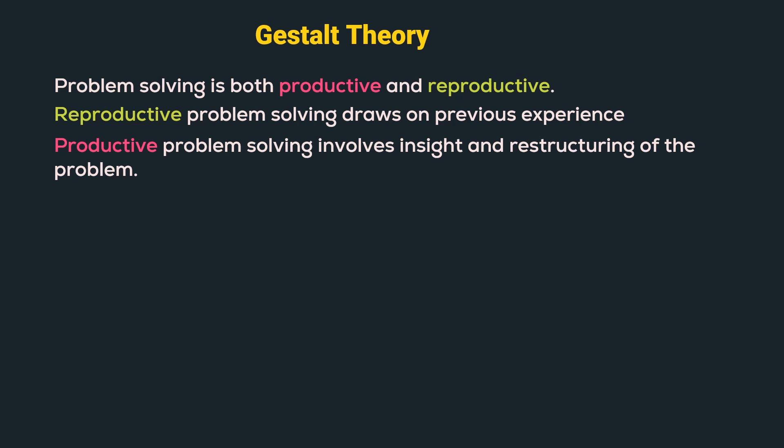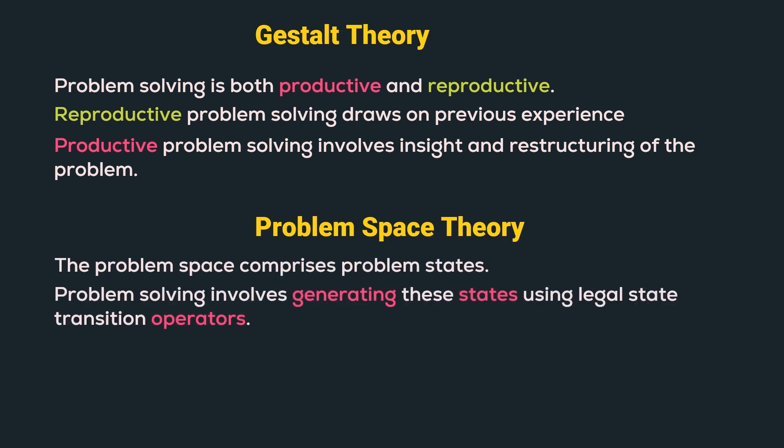The next theory is problem space theory. It suggests that the problem space has problem states and problem solving involves generating these states using legal state transition operators. So, we have an initial state and a goal state and we use operators to move from the initial to the goal state.